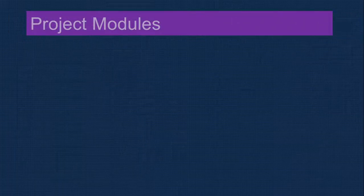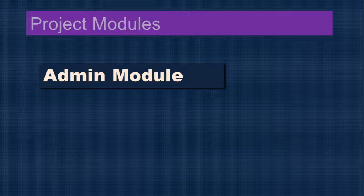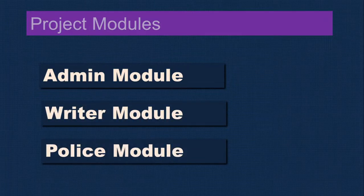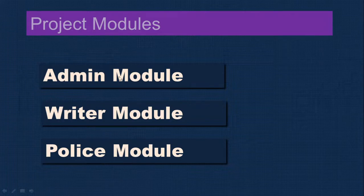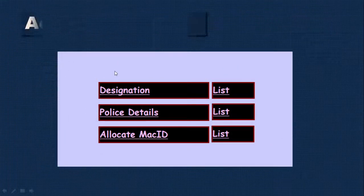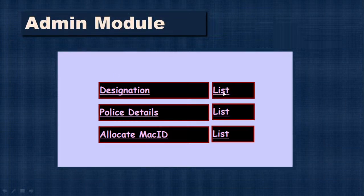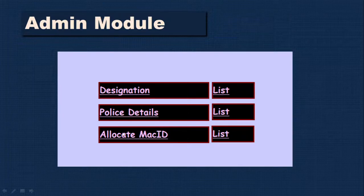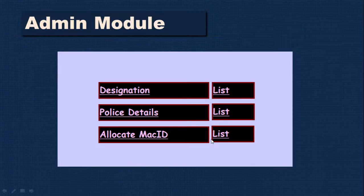Now let's look at the modules in this project. It will have three modules: admin module, writer module, and police module. The writer writes the case and the police views it. Admin creates the basic entries. Admin can create designations and view the corresponding list, create police details for both inspector and writer roles so they can log in. There is also an allocate MAC ID option where we read the MAC ID of the system and allocate that ID to the corresponding user, so they can log in only from that particular system.